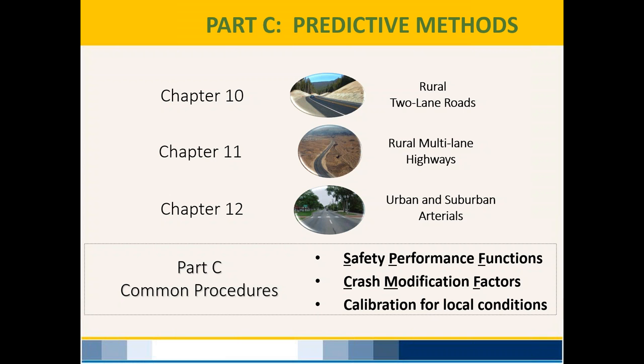The SPFs within the highway safety manual are considered national SPFs — they are not Kentucky-specific. They were developed according to specific base conditions common across the United States. When your roadway or project differs from those base conditions, you must apply a crash modification factor to properly adjust the SPF. Calibration factors allow agencies like KYTC to use our specific crash history to adjust the SPF model to better fit Kentucky's data.